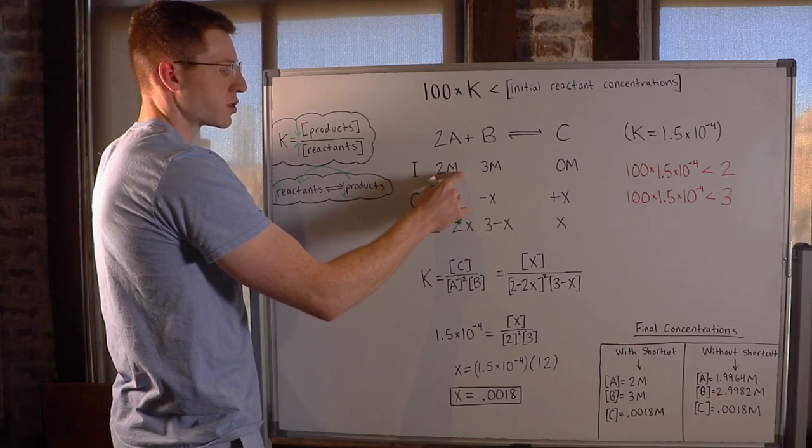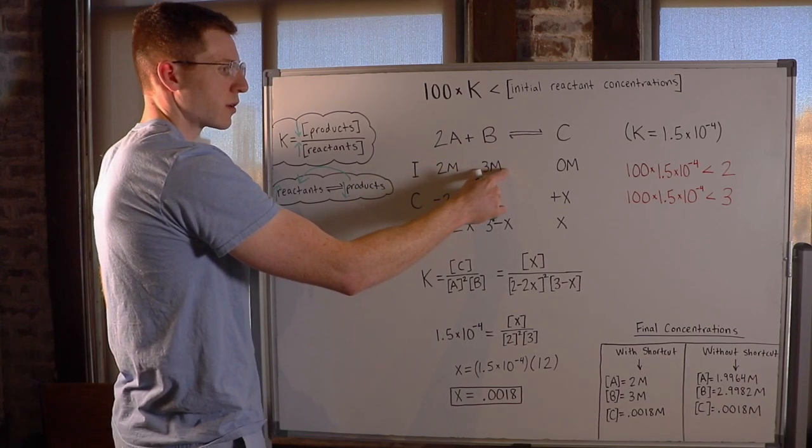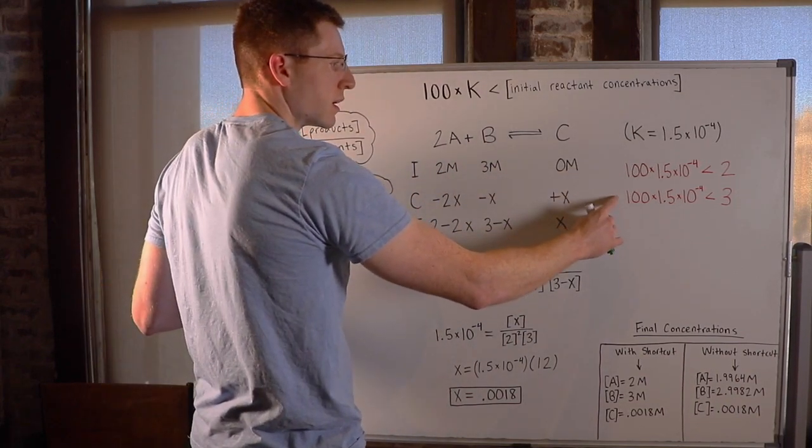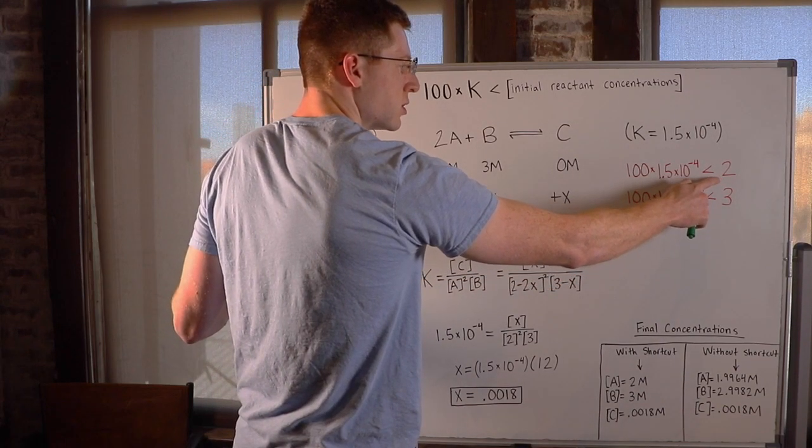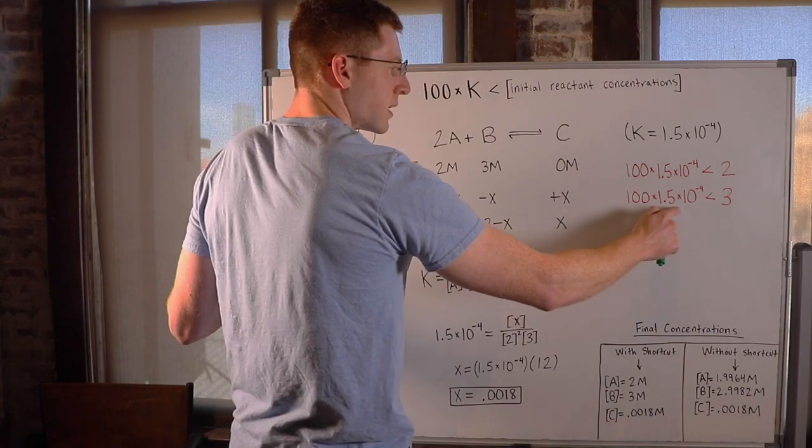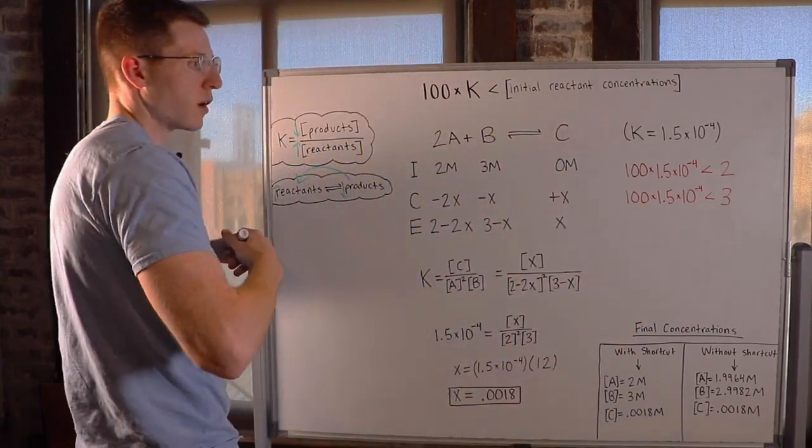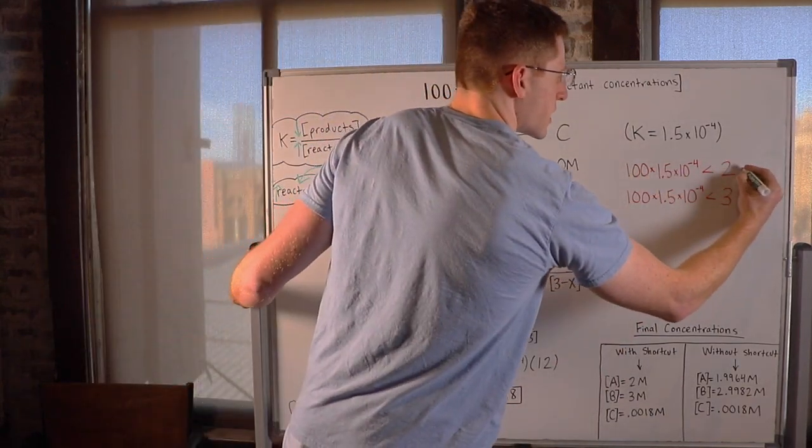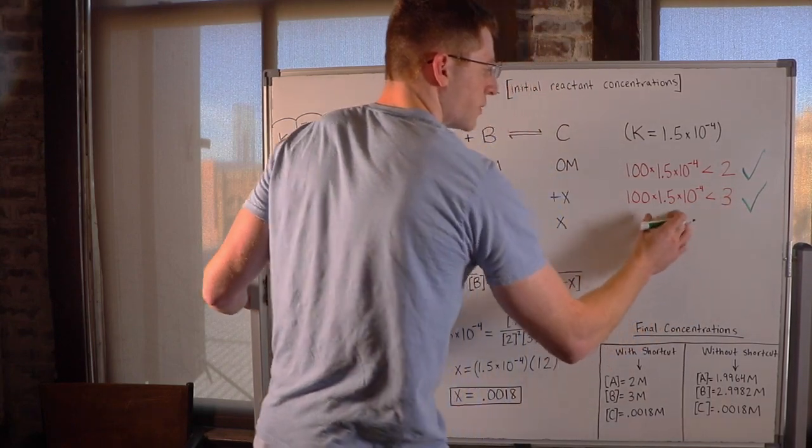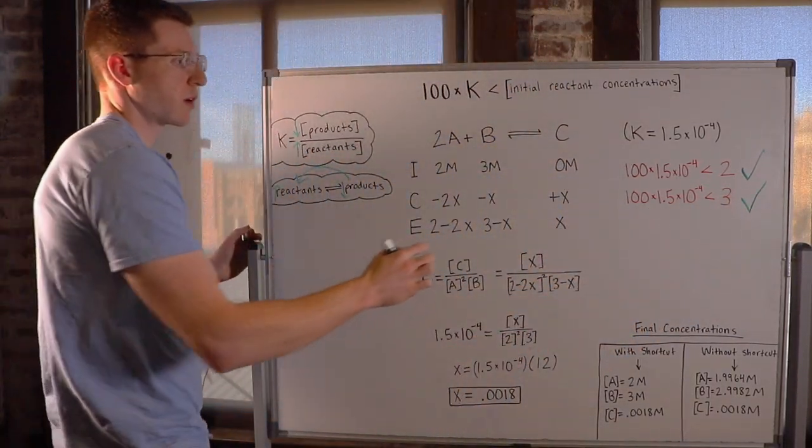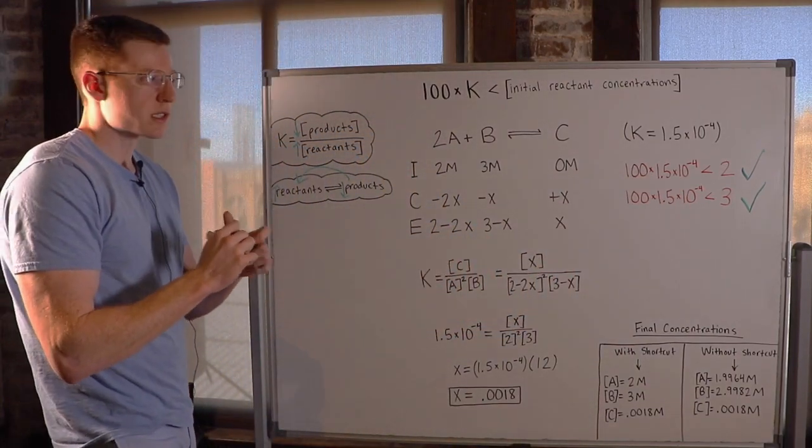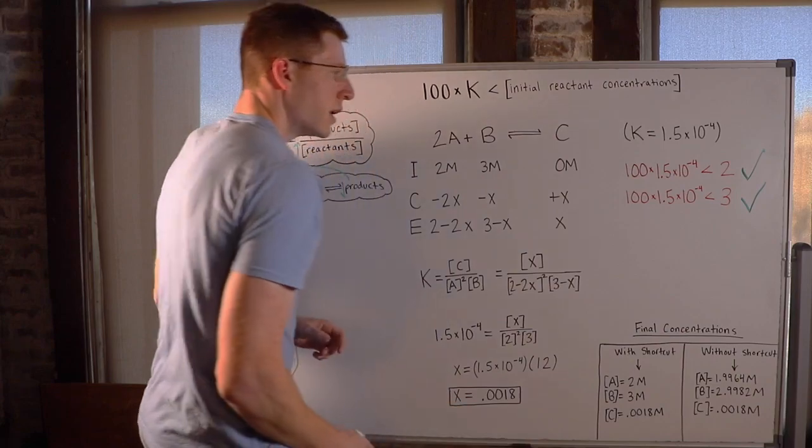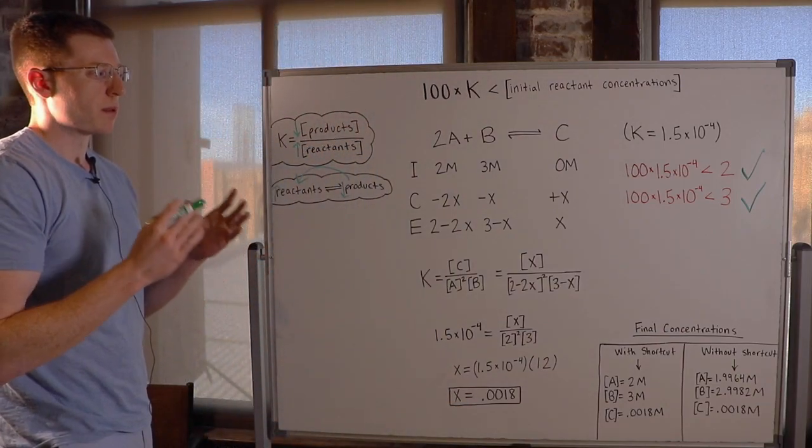So our initial reactant concentrations are 2 molar and 3 molar. So I had to test both. I said, is 100 times my K less than 2, and is 100 times my K less than 3? Well, of course it is. And if it's less than 2, it's also going to be less than 3. And if you can't see that, you can go ahead and type 100 times 1.5 times 10 to the negative 4 into a calculator and you'll see it's still much smaller than 2. So that means our shortcut rule applies here.